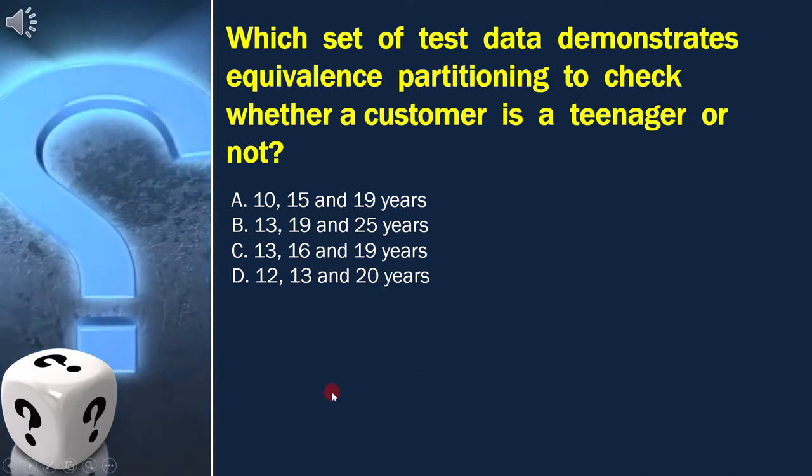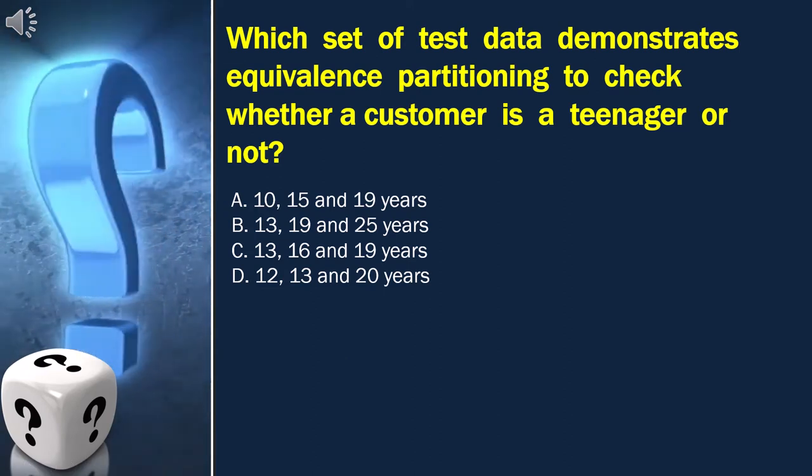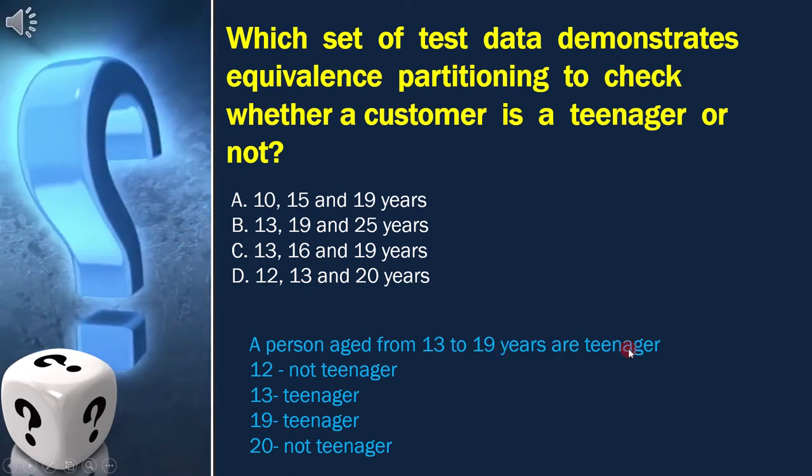Now, before drawing the equivalence class, we should know the definition of teenager. A person aged from 13 to 19 years is a teenager.